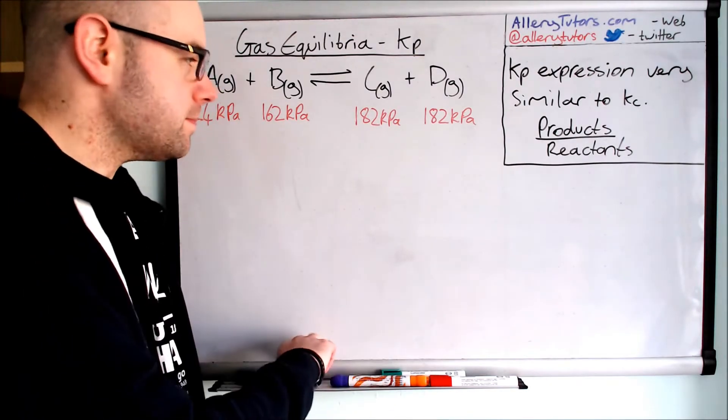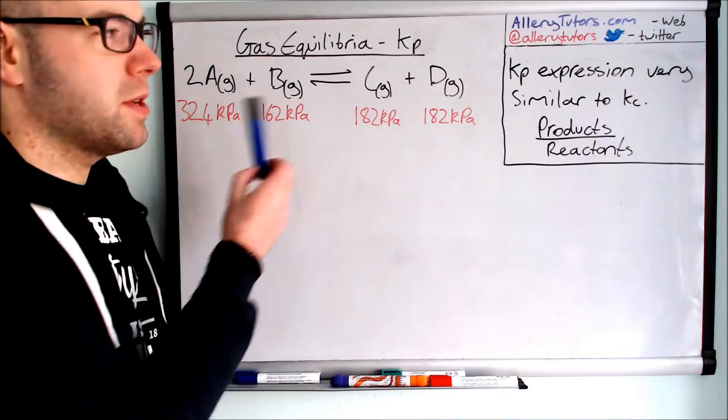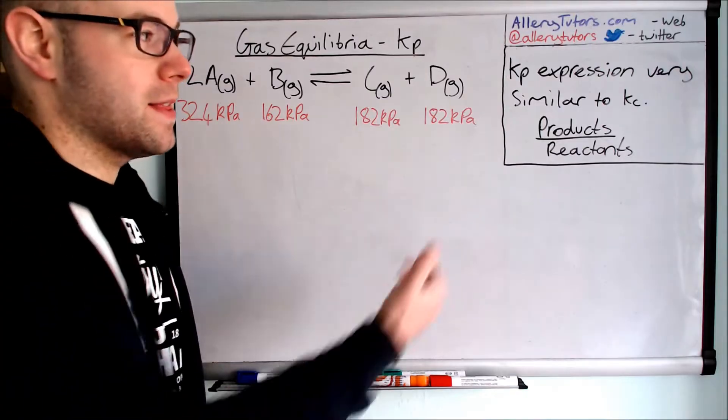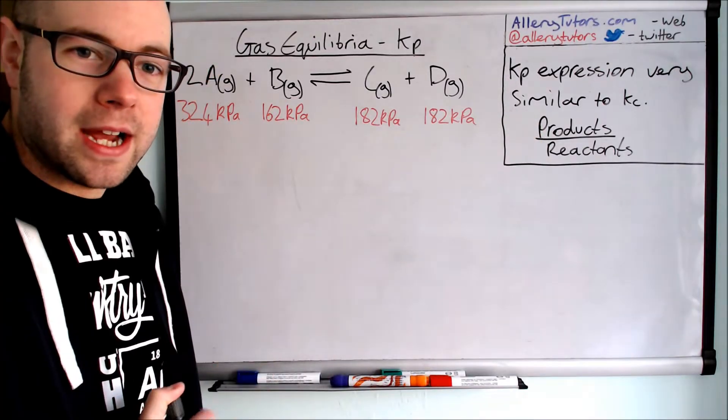So we're going to start by looking at how we can work out KP. And KP is very similar to KC in that the products are at the top and the reactants are at the bottom.